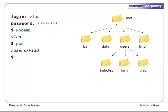Underneath slash users, we find one directory for each user with an account on this machine. The mummy's files are stored in slash users slash imhotep, the wolfman's in slash users slash larry, and ours in slash users slash vlad, which is why vlad is the last part of the directory's name.